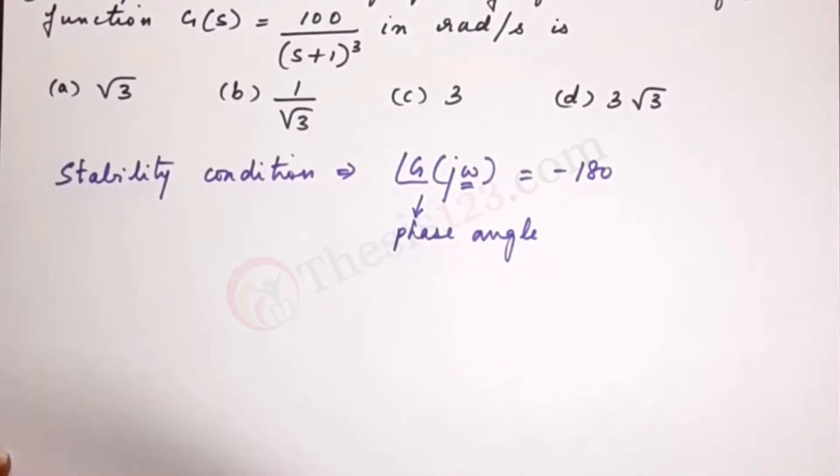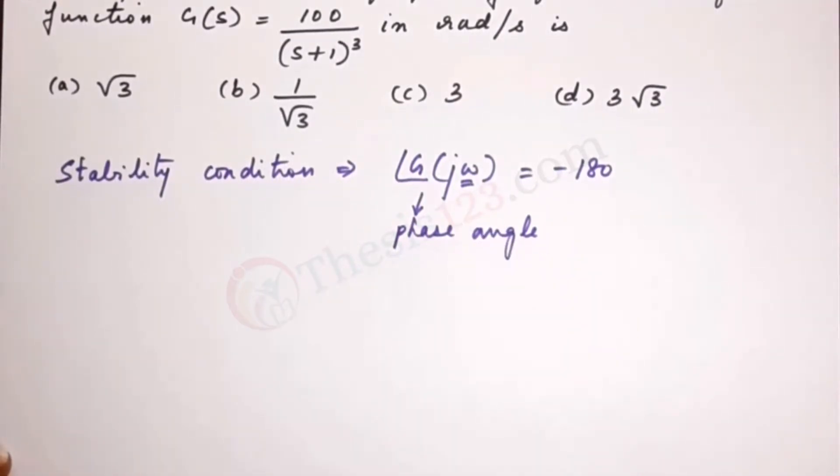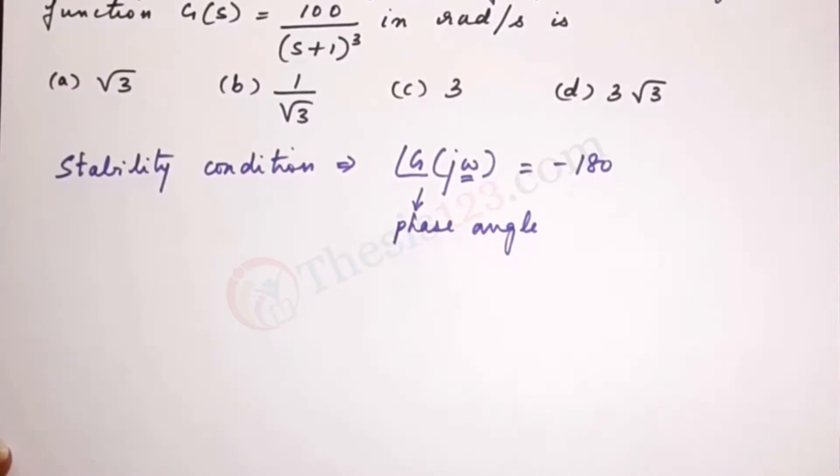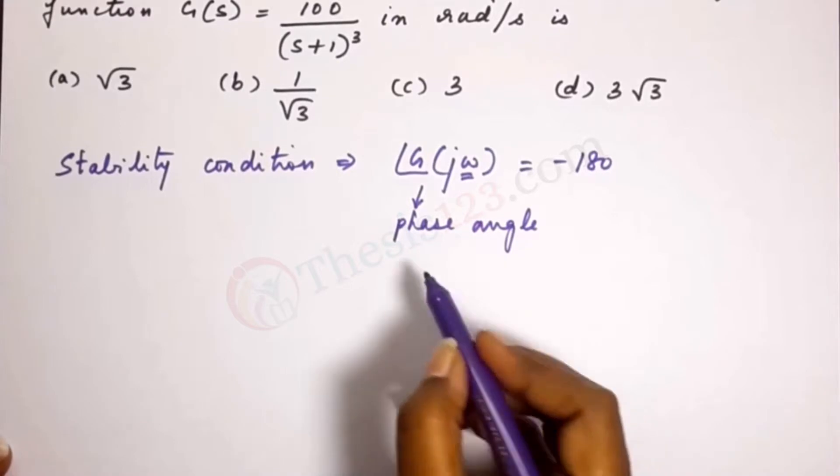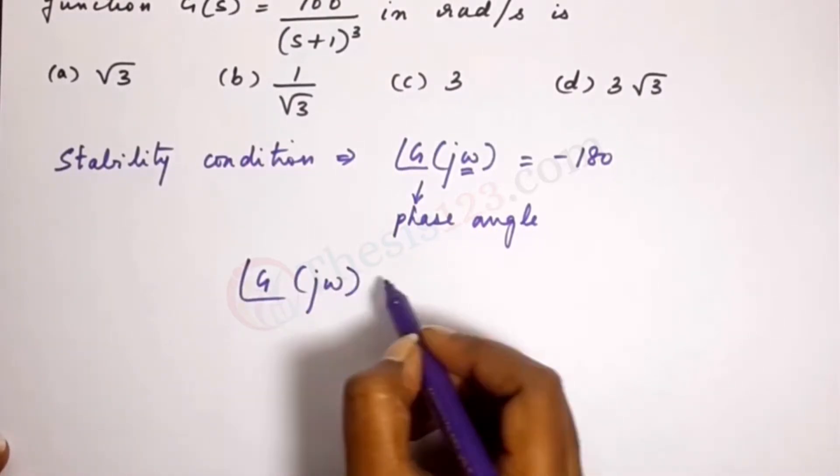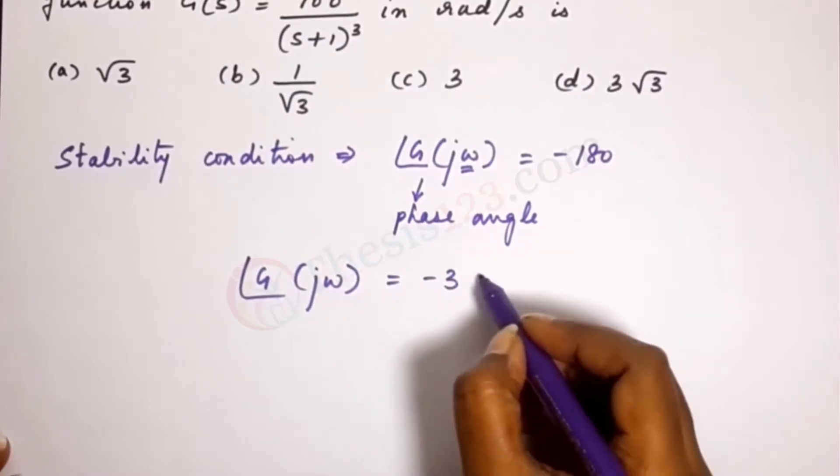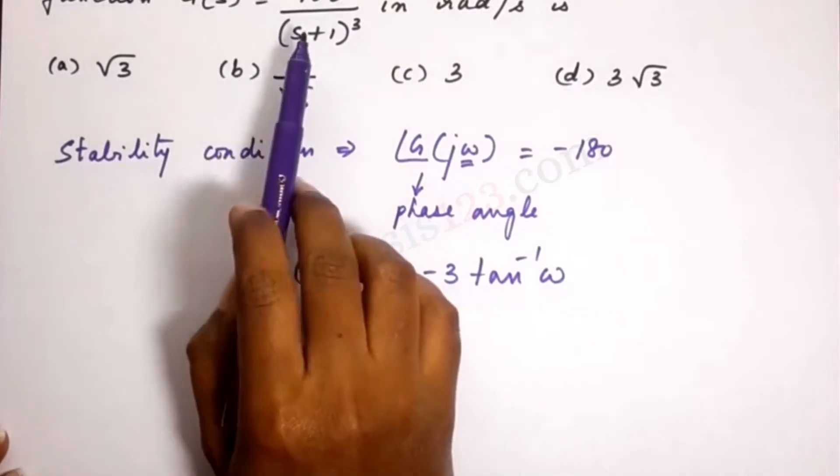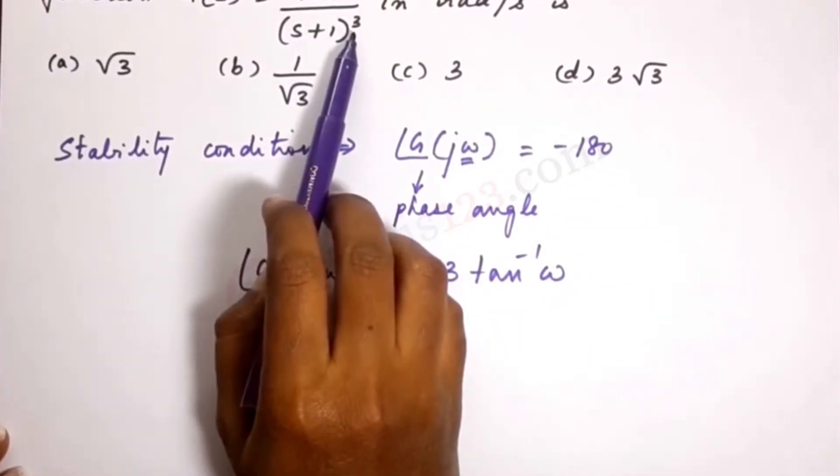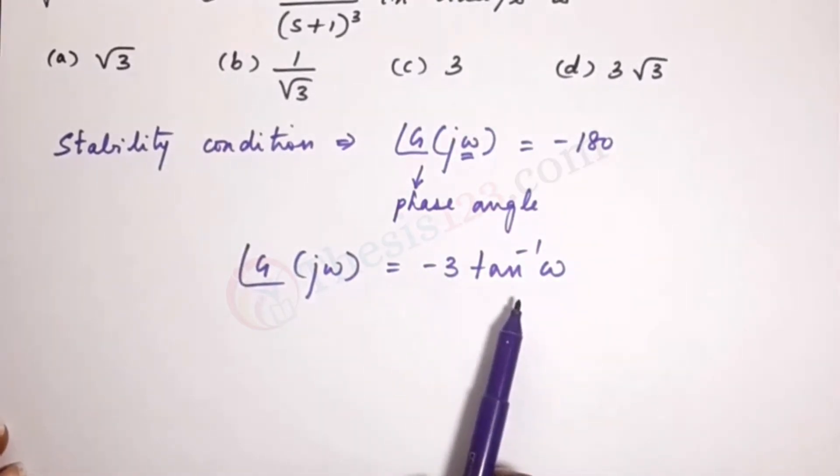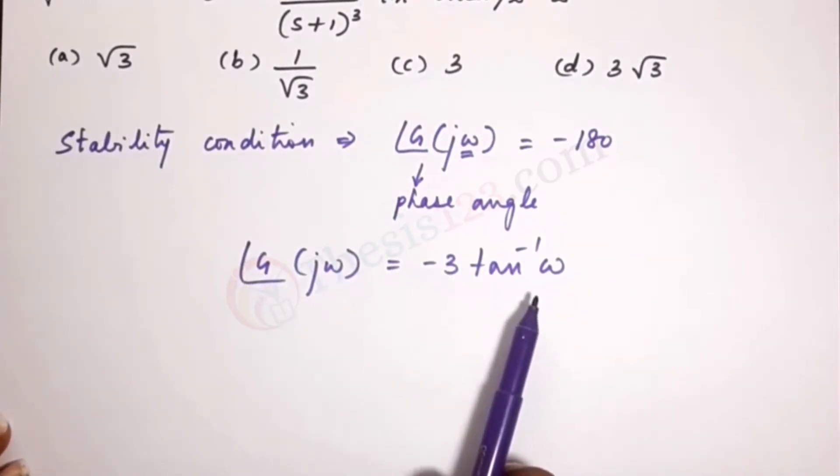So let's observe what has been given in the transfer function which is 100 over s plus 1 whole cube. Now this can further be written as g j omega is equal to minus 3 tan inverse omega. That's because here we have the power 3, 100 over s plus 1 to the power of 3 minus 3 tan inverse omega.